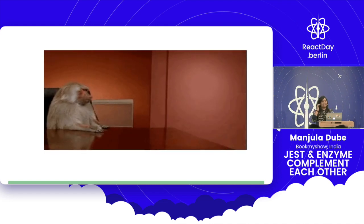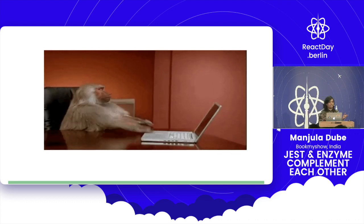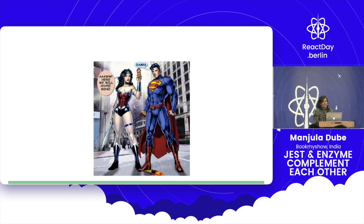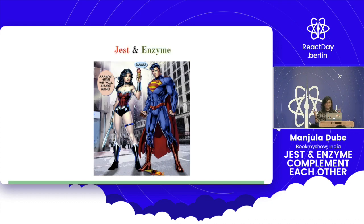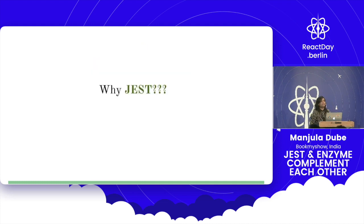I think all of us feel like this when we are told to write test cases. So once upon a time there were tons and tons of testing frameworks to test your JavaScript code, but then came the Wonder Woman and Superman known as Jest and Enzyme. So why Jest? We wanted something that would set up really quick and we could run the tests in parallel. This is where Mocha lost the battle for us.